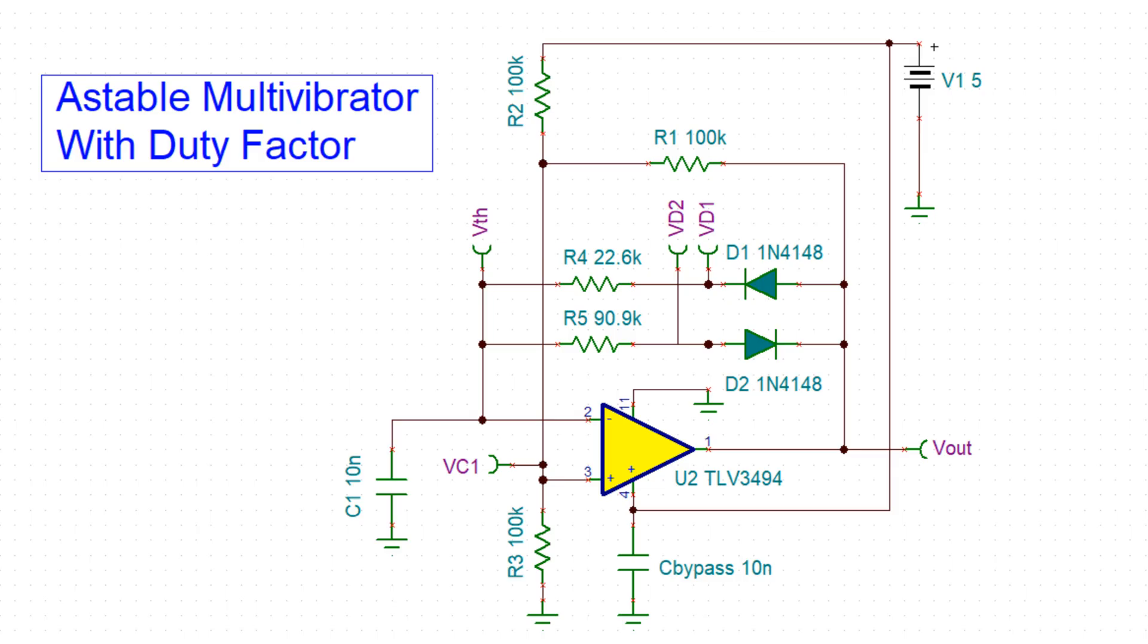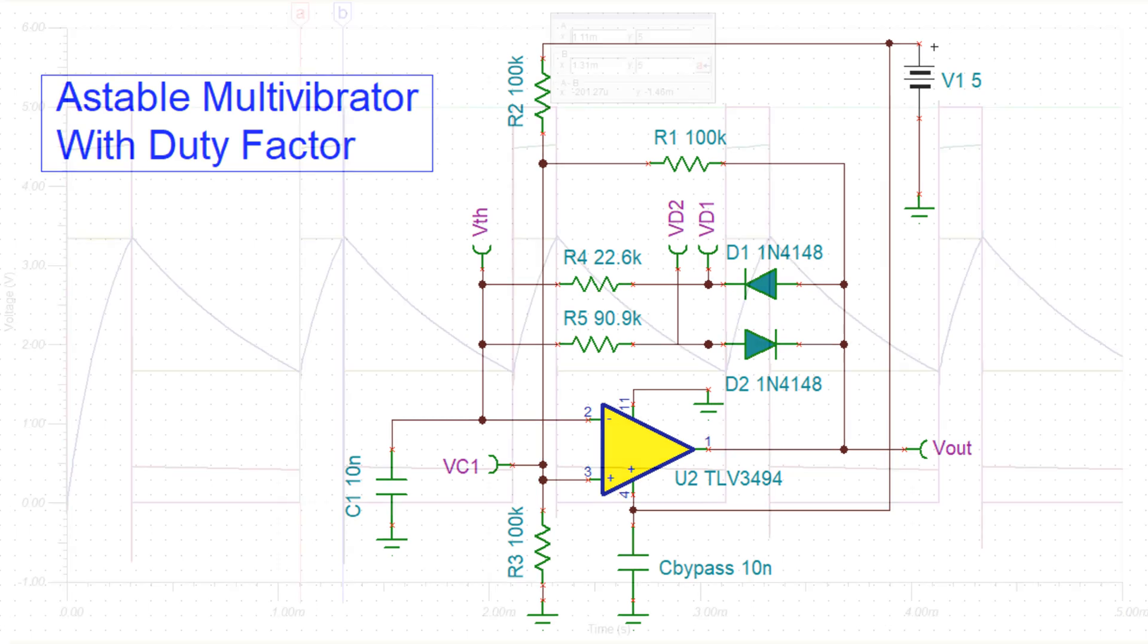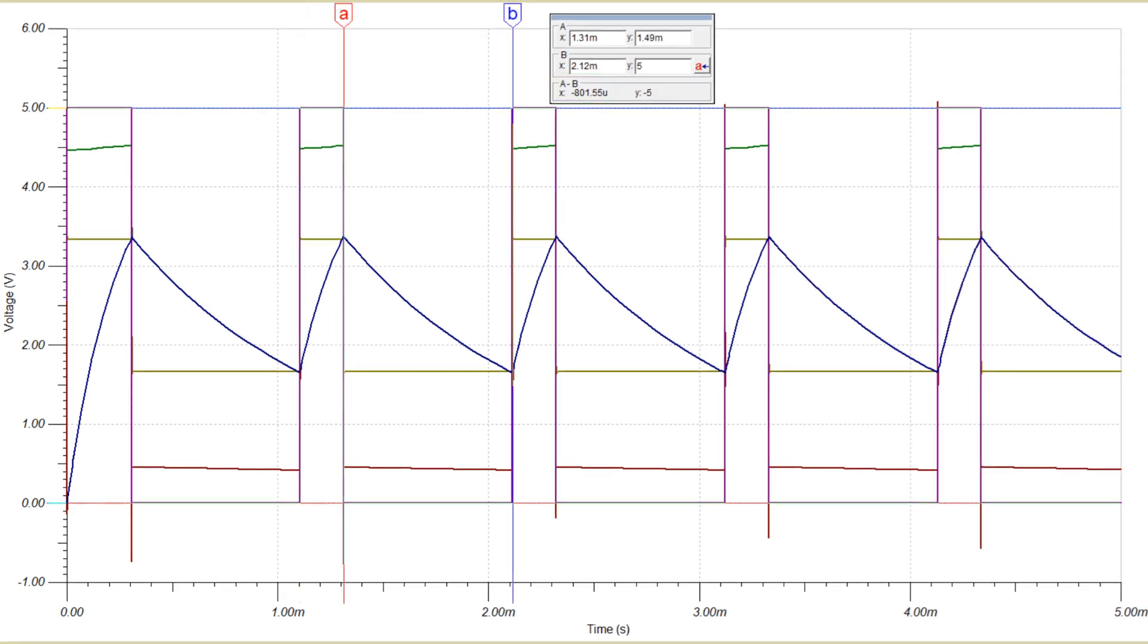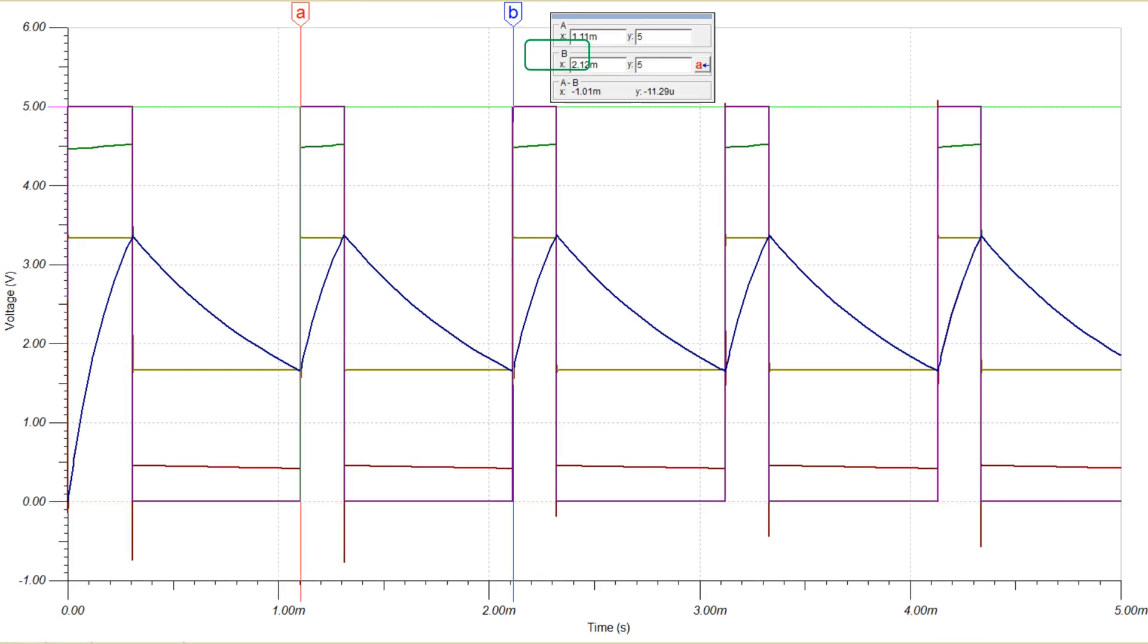Here's the simulation schematic with the calculated component values. The time high is 200 microseconds. The low time is around 801 microseconds. And the period is 1.01 milliseconds. We nailed it.